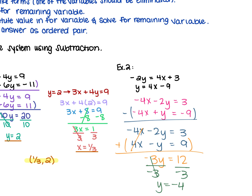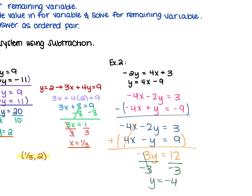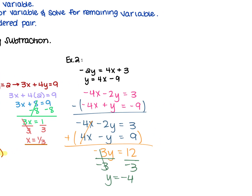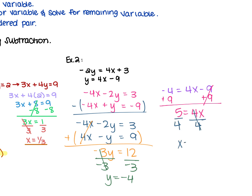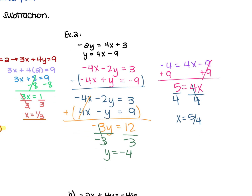If y equals negative 4, choose one of the original equations and plug that in to solve for x. Using the bottom equation, plug in negative 4: negative 4 equals 4x minus 9. Add 9 to both sides to get 5 equals 4x. Divide each side by 4 and x equals 5/4. Even using one of the standard form equations gives the same result. So with x being 5/4 and y equaling negative 4, the solution is (5/4, negative 4).